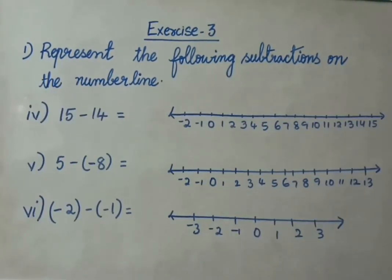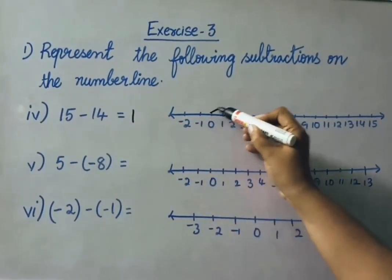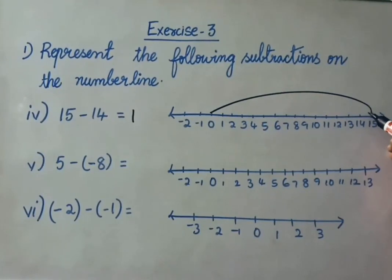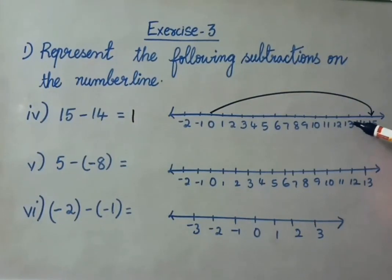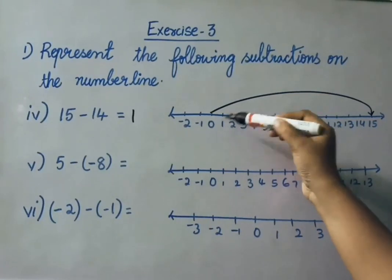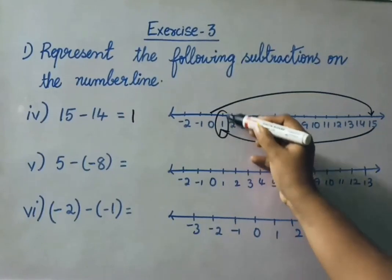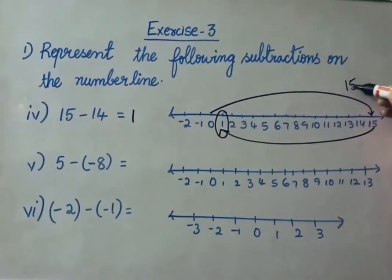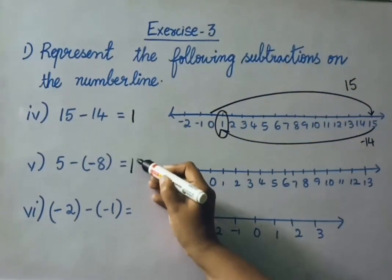See the 4th sum: 15 minus 14 — that is 1. On the number line, mark 0 onwards 15, count backward 14 numbers, and from 15 we land on 1. So 15 minus 14, we got answer 1. See the next: 5 minus of minus 8 — that means 5 plus 8, answer is 13. First show 0 onwards 5, then add 8 numbers moving right: 1 through 8, so from 5 onwards we count and get 13. Mark it on 13.